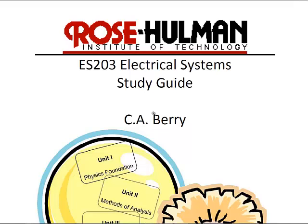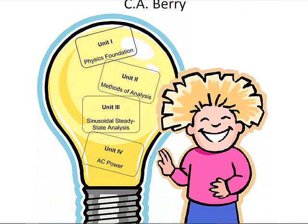The first thing I want to do is describe what we will teach in this course. There are four units. The first one will be a physics foundation — an overview of some things you should have learned in your physics course, including current, charge, power, voltage, energy, as well as the relationships for resistors and sources such as Ohm's law, and ideal voltage and current sources.